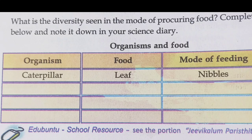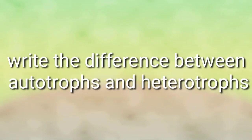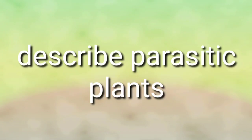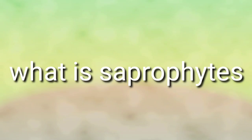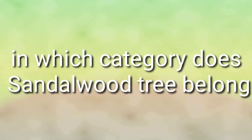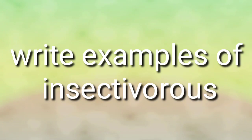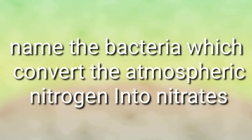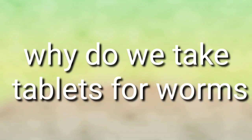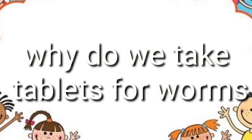We will learn about the part food plays in humans in the next class. Now let us go through some questions: 1. Fill up the table. 2. What is photosynthesis? 3. What is nutrition? 4. Write the difference between autotrophs and heterotrophs. 5. Describe parasitic plants. 6. What are saprophytes? 7. In which category does the sandalwood tree belong? 8. Write examples of parasites among animals. 9. Write examples of insectivorous plants. 10. List the names of elements required for plants in large quantities. 11. Name the bacteria which convert atmospheric nitrogen into nitrates. 12. Why do we take tablets for worms?